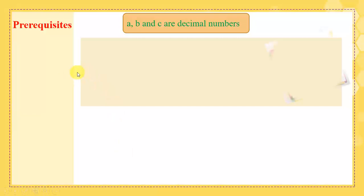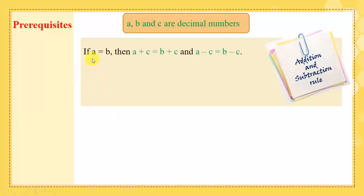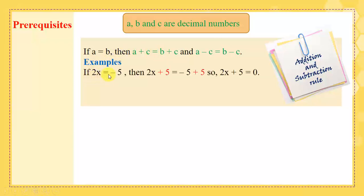Also, we already know that if a equals b, then a plus c equals b plus c, and a minus c equals b minus c. This means that if we have an equality between two numbers, we can add or subtract the same number from both sides. For example, if 2x equals negative 5, then 2x plus 5 equals minus 5 plus 5. Here we added 5 to both sides, so we get 2x plus 5 equals 0.